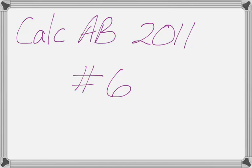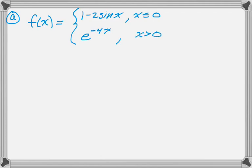All right, this is number 6 from the 2011 Calc AB exam, and it is a weird piecewise function that we have to do a bunch of stuff with. So let's write down the function, and it's 1 minus 2 sine of x when x is less than or equal to 0, and it is e to the negative 4x when x is greater than 0.